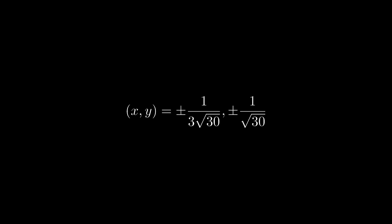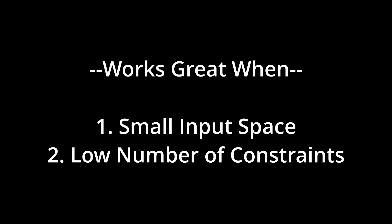This method works totally fine when the number of input variables is small and there's really only one constraint. But sometimes you'll find situations where your function f is a function of many variables — much more than 2 — and you might even have multiple constraints. In that case, using the substitution method can become really cumbersome to do by hand, and we'll see that Lagrange multipliers are going to be a lot easier to use. There are also some situations where substitution can be a little trickier than you might expect.